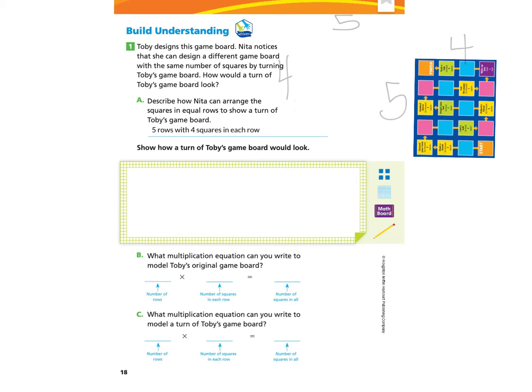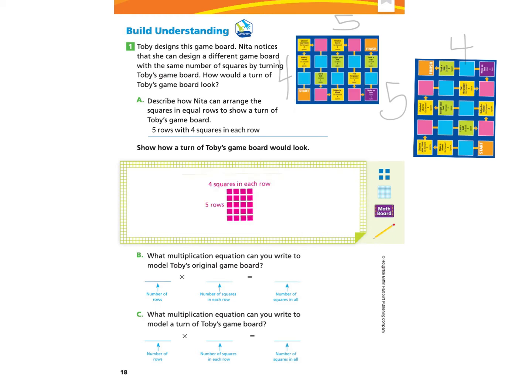Now we can answer part A. Describe how Nita can arrange the squares in equal rows to show a turn of Toby's game board: it would be five rows with four squares. Go ahead and draw what that looks like inside the green rectangle to show how a turn of Toby's game board would look. When you're back, you'll see an example — there are five rows and four squares in each row. Remember, this one is Nita's and this one is Toby's.